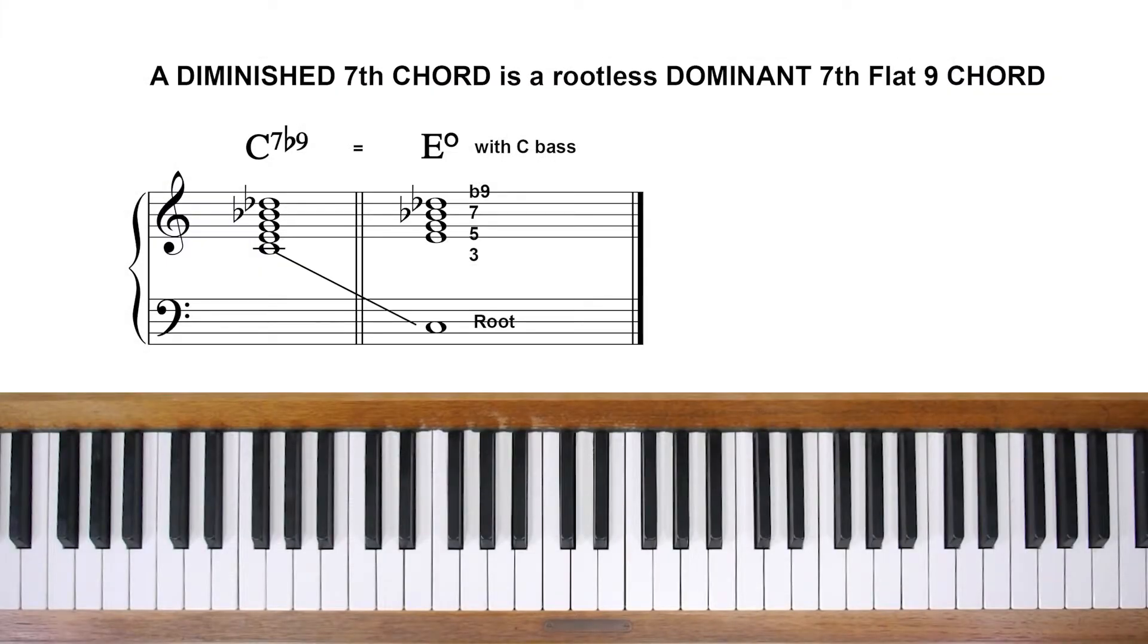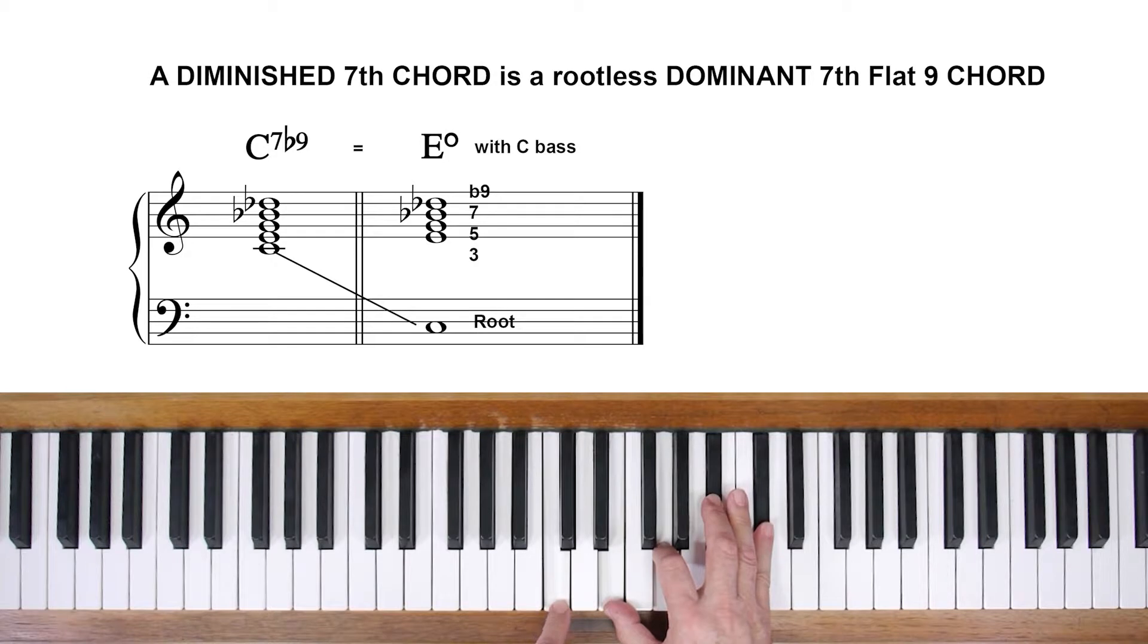However, the diminished scale really comes into its own when playing over dominant seventh flat nine chords. To understand why this is, check out a root position C7 flat nine chord. The flat nine is the D flat on top. It's not possible to play this five note chord in one hand, so the root is often omitted or moved down an octave or given to the bass player.